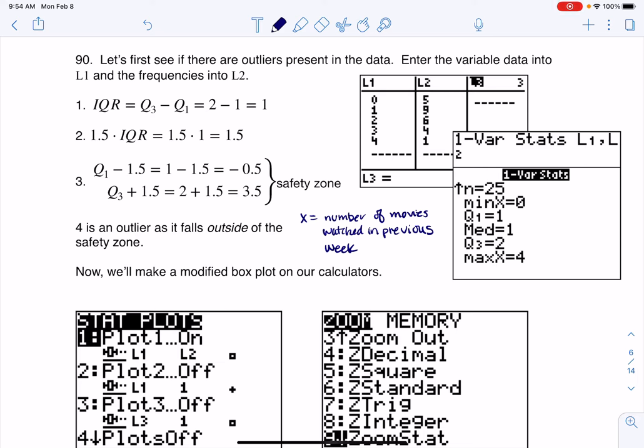The directions ask to construct a box plot. I'm going to do this by hand and then on my calculator. The first thing I need to do when making a box plot is figure out if there are outliers in the data. I'm going to use my calculator for that. I put my variable in L1 and the frequencies into L2.